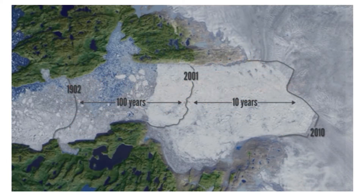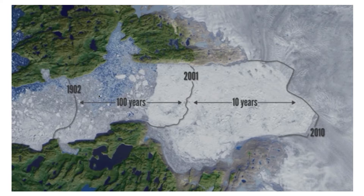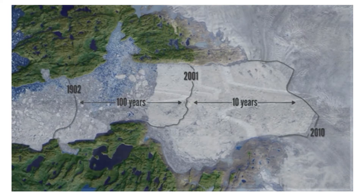Very, very different sort of an image. I'll give you the clue — you're looking at ice, ladies and gents. And what you're looking at is some lines: 1902 to 2001, that's not quite 100 years, but we'll forgive them — about 100 years. And then 2001 to 2010. What are they trying to get across with that image? This is quite a big thing in geography, and quite a big thing for the planet, to be honest.